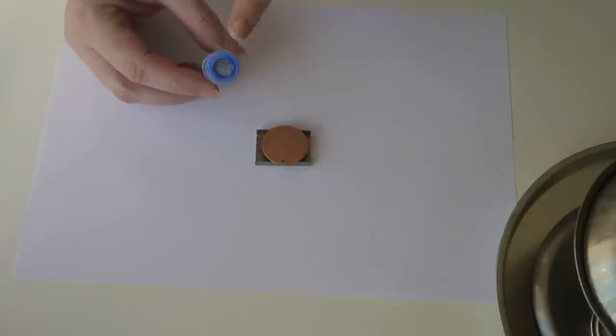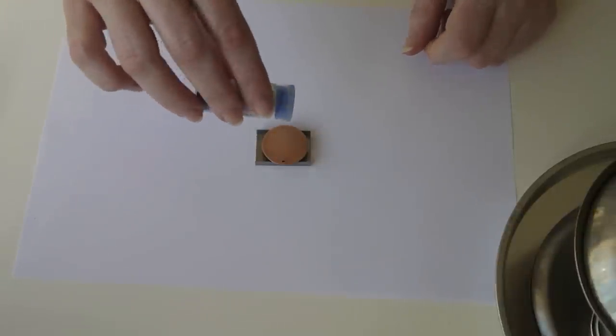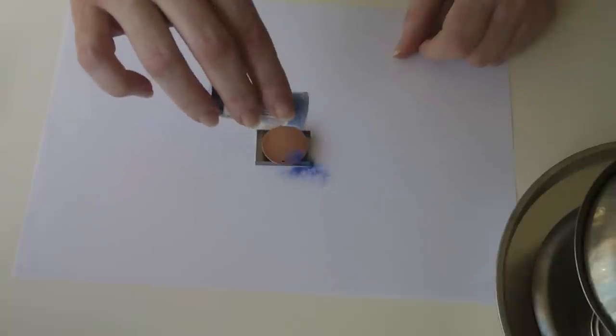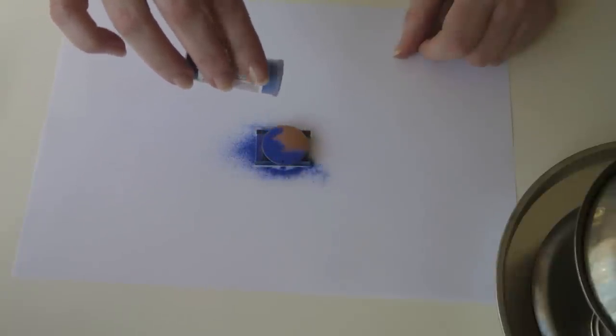Pop a sift top in the top of the tube and this will make powdering your blank a lot easier. What you want is a good even layer of powder all over the surface of your copper blank.